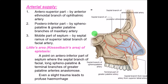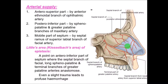Coming to the arterial supply, it is supplied by three to four main arteries. The anterior superior part is supplied by the anterior ethmoidal branch of the ophthalmic artery. The posterior inferior part is supplied by the sphenopalatine and greater palatine branches of the maxillary artery. The mobile anterior-most part is supplied by the septal branches of the superior labial branch of the facial artery. There is a very important area called the Little's area where the septal branch of the facial artery, sphenopalatine, and the terminal branch of the greater palatine arteries anastomose, and even slight trauma here may lead to severe, profuse bleeding.